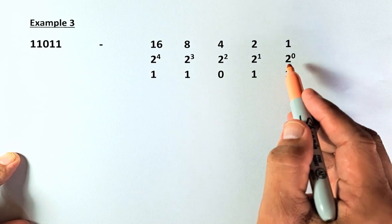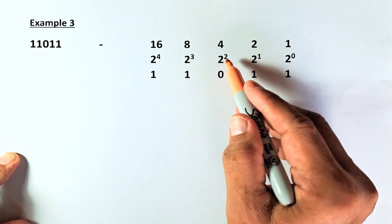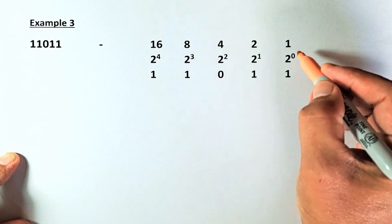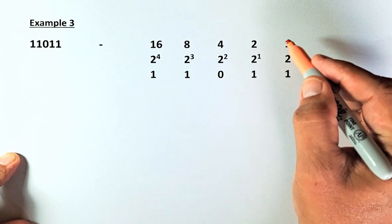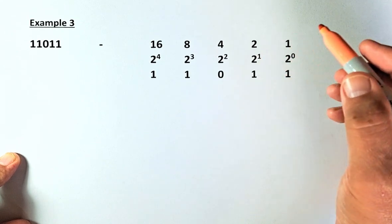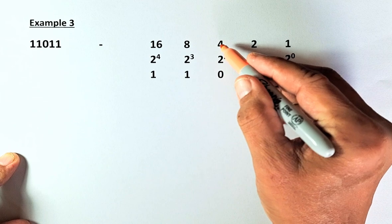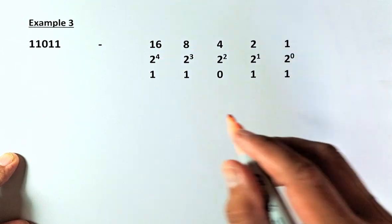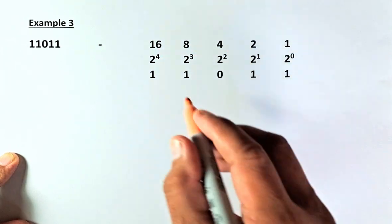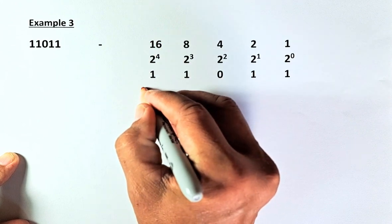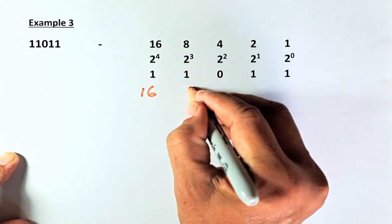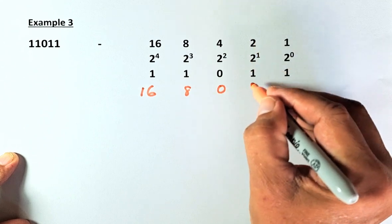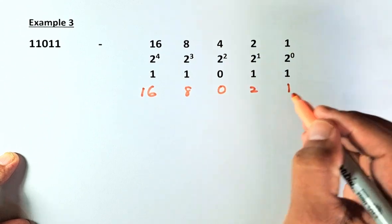We are going to start: 2 power 0, 2 power 1, 2 power 2, 2 power 3, 2 power 4. So 2 power 0 is 1, 2 power 1 is 2, 2 power 2 is 4, 2 power 3 is 8, and 2 power 4 is 16. So you multiply: 1 times 16 is 16, 1 times 8 is 8, 0 times 4 is 0, 1 times 2 is 2, and 1 times 1 is 1.